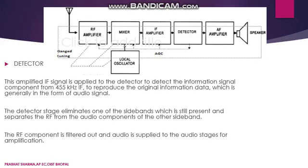The next block is the detector, which is an envelope detector. We have already discussed the envelope detector in full detail. The envelope detector rejects the carrier frequency and passes the message signal. The detector stage eliminates one of the sidebands still present, separates the RF from the audio component, filters out the RF component, and applies the audio to the audio stages for amplification.